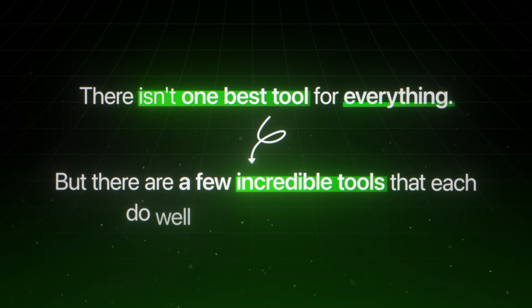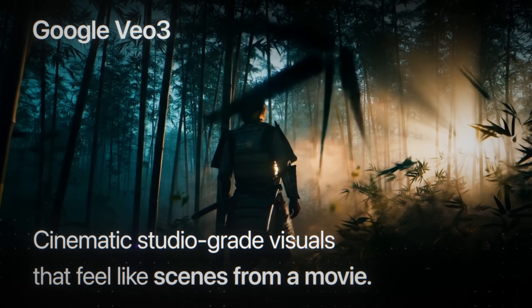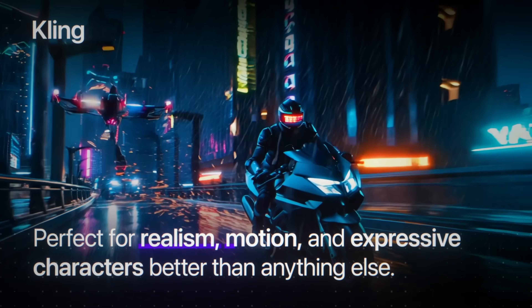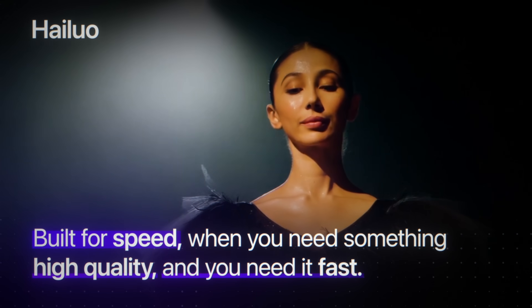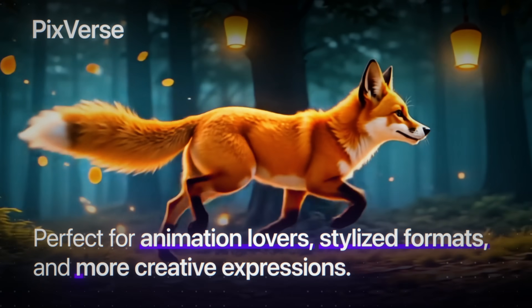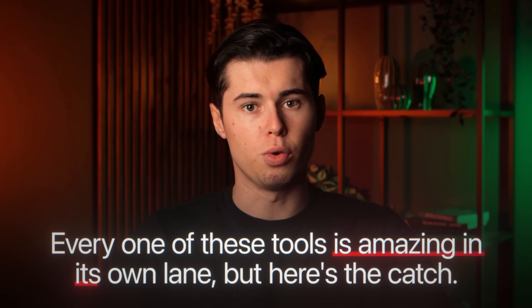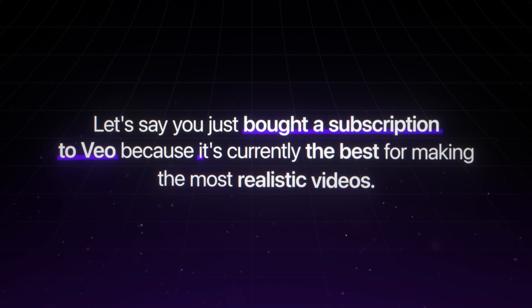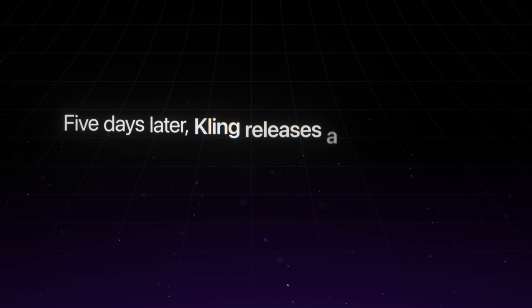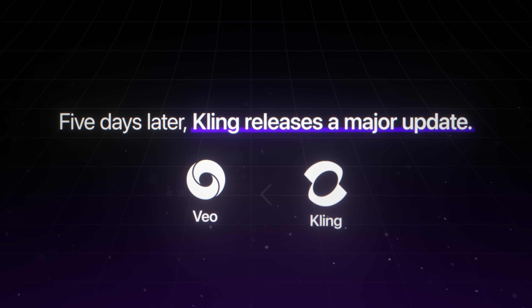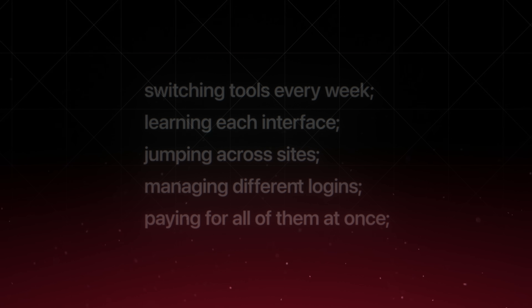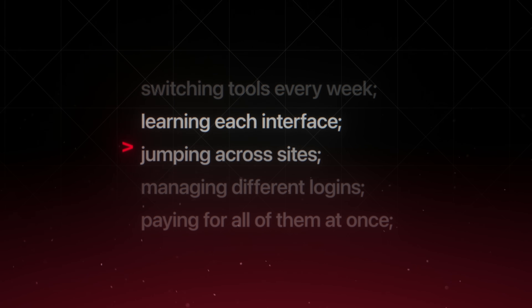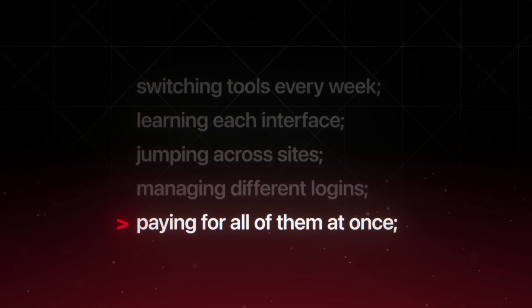By now you've probably realized something: there isn't one best tool for everything, but there are a few incredible tools that each do well in their own category. Veo gives you cinematic studio-grade visuals that feel like scenes from a movie. Kling is perfect for realism, motion, and expressive characters. Hilo is built for speed when you need something high quality fast. Pixverse is perfect for animation lovers, stylized formats, and more creative expression. But here's the catch: let's say you just bought a subscription to Veo because it's currently the best for realistic videos. Then five days later, Kling releases a major update and suddenly it's outperforming Veo, but you've already paid for a monthly plan and your budget's blown on yesterday's best model. Things like that are constantly happening in AI video, and unless you want to be switching tools every week, learning each interface, jumping across sites, managing different logins, or paying for all of them at once, it's a losing game.